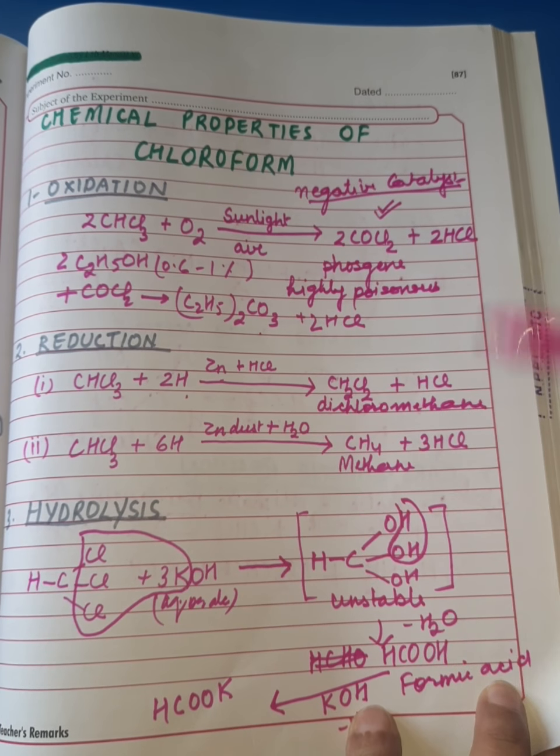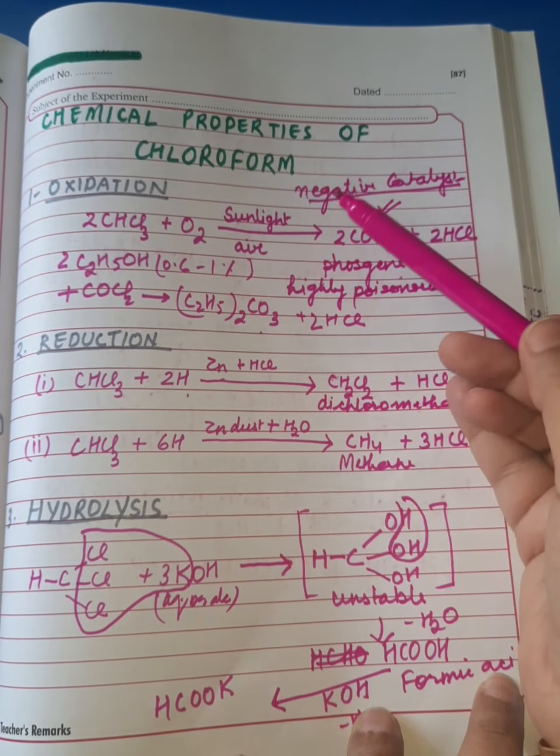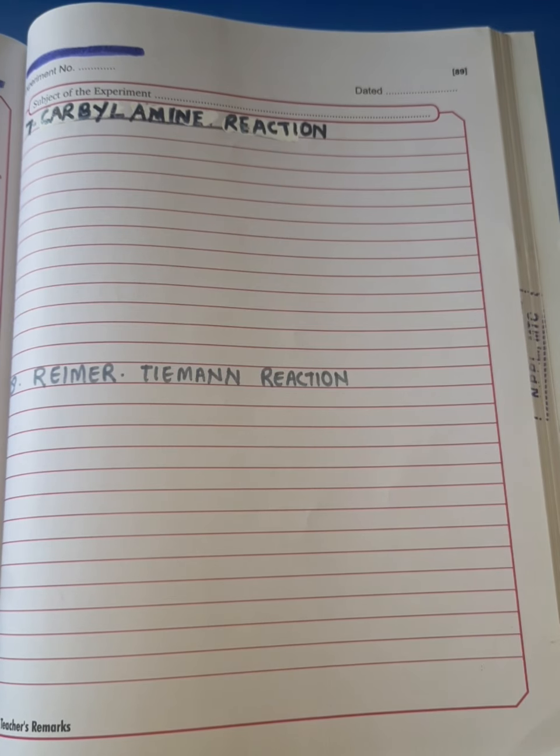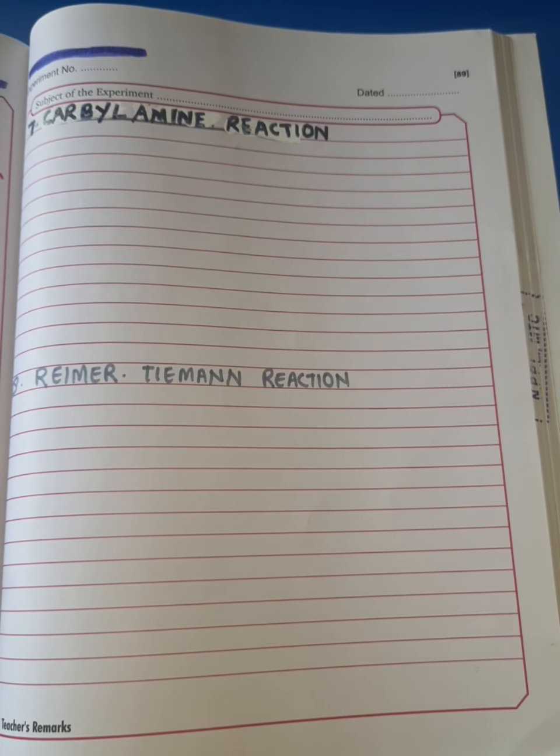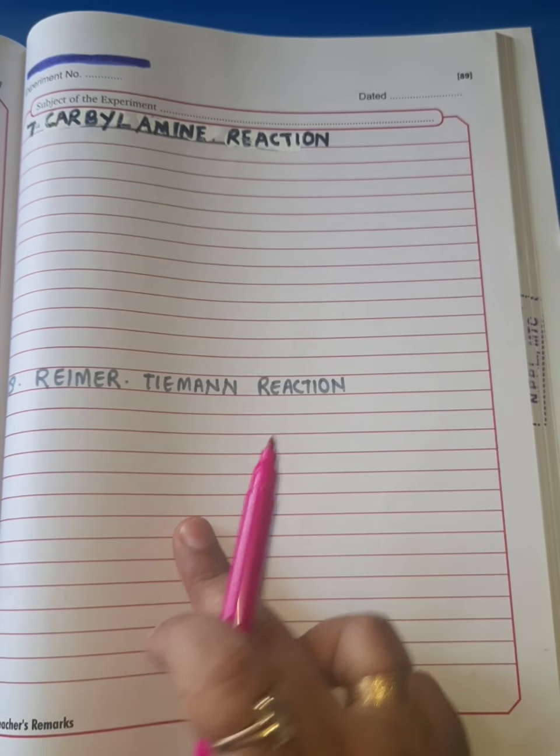Dear students, this is a continuation video of the series on chemical properties of chloroform where I taught you around six reactions. Two name reactions were left: carbylamine reaction and Reimer-Tiemann reaction.